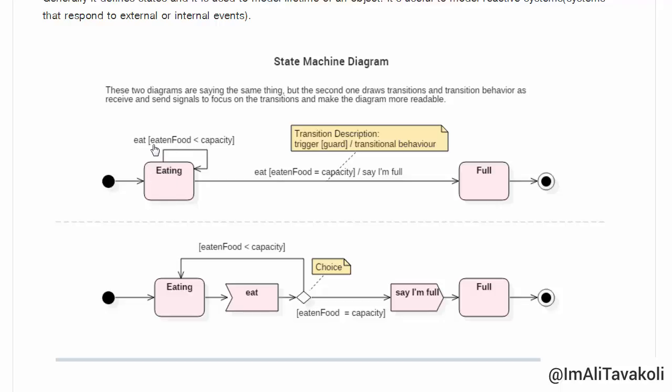then we will stay on the eating state. What is the condition? This is it. Eaten food is less than capacity. If it's true, then stay on the eating state. If it's not, we will move on transit to the full state. So, here is the transition description for this transition. If we are talking about the eat event. Its guard condition is that if eaten food equals to capacity, then do this behavior. Say I'm full. And then transit to the full state. And then finally end the process.